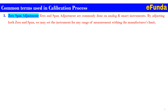Zero and span adjustments are commonly done on analog and smart instruments. By adjusting both zero and span, we may set the instrument to any range within the manufacturer's limits. For most analog instruments, zero and span adjustments are interactive — adjusting one has an effect on the other. For smart instruments, there is no interaction between span and zero adjustment.